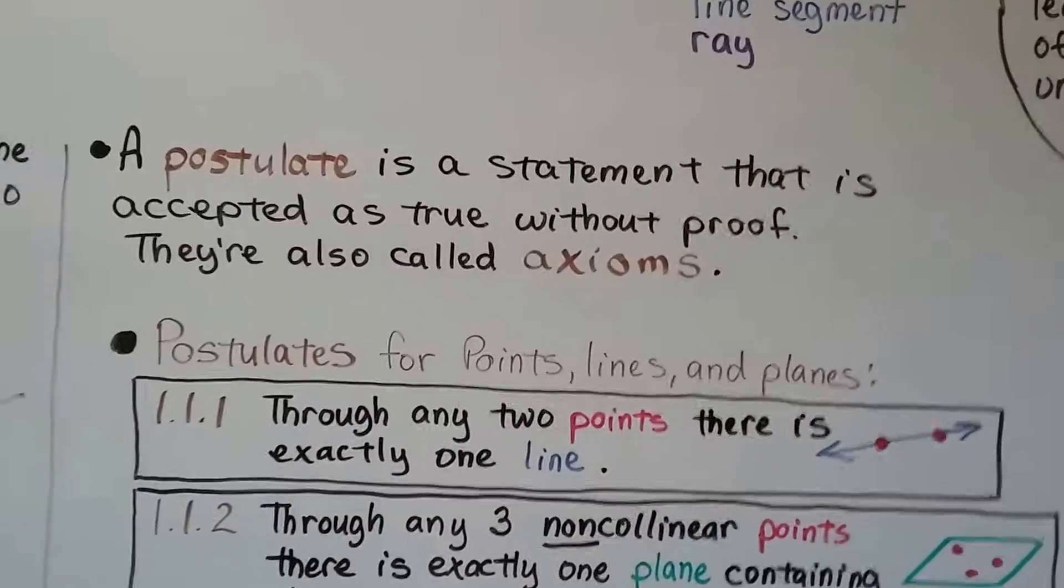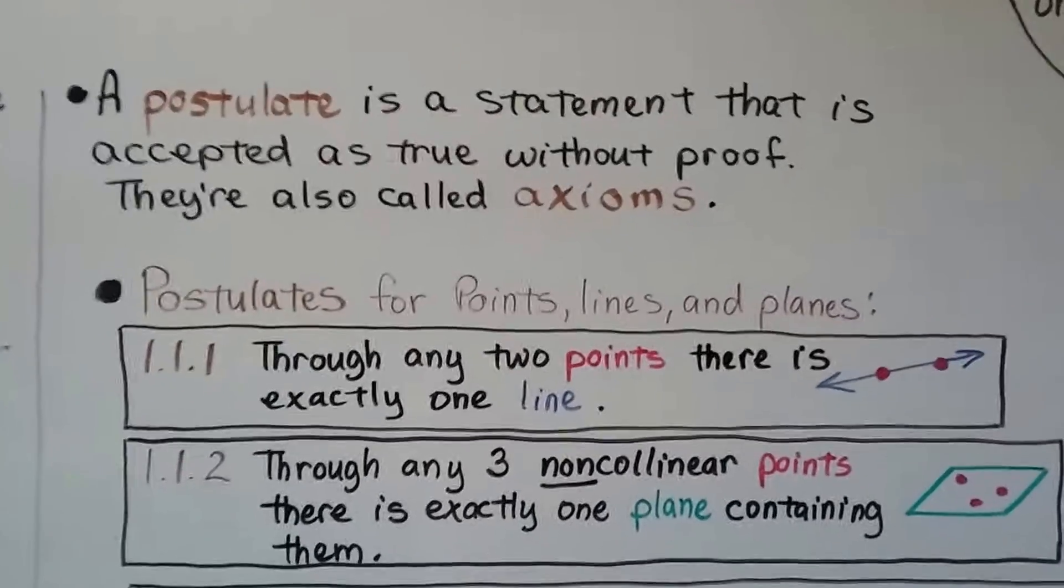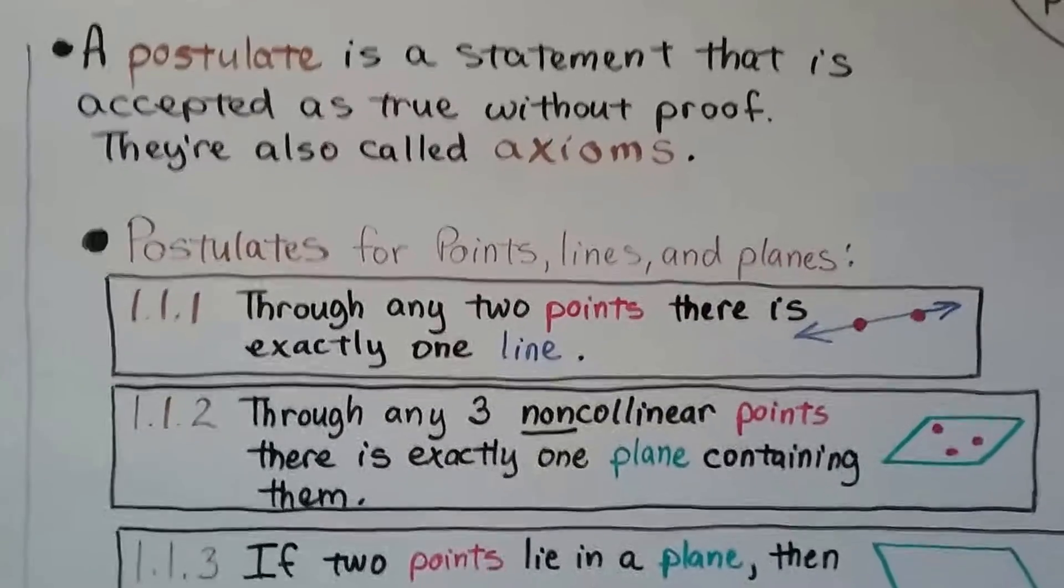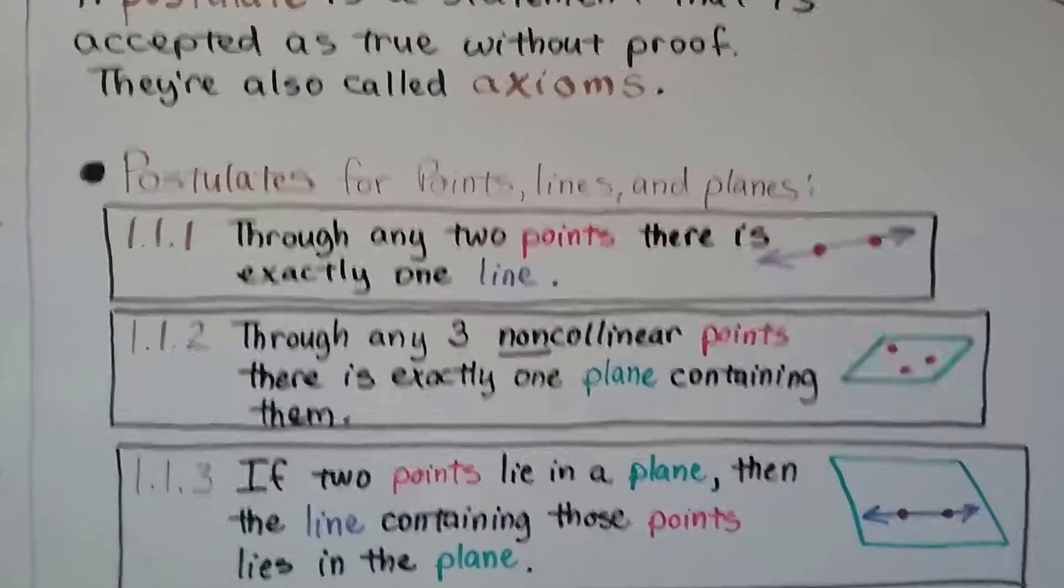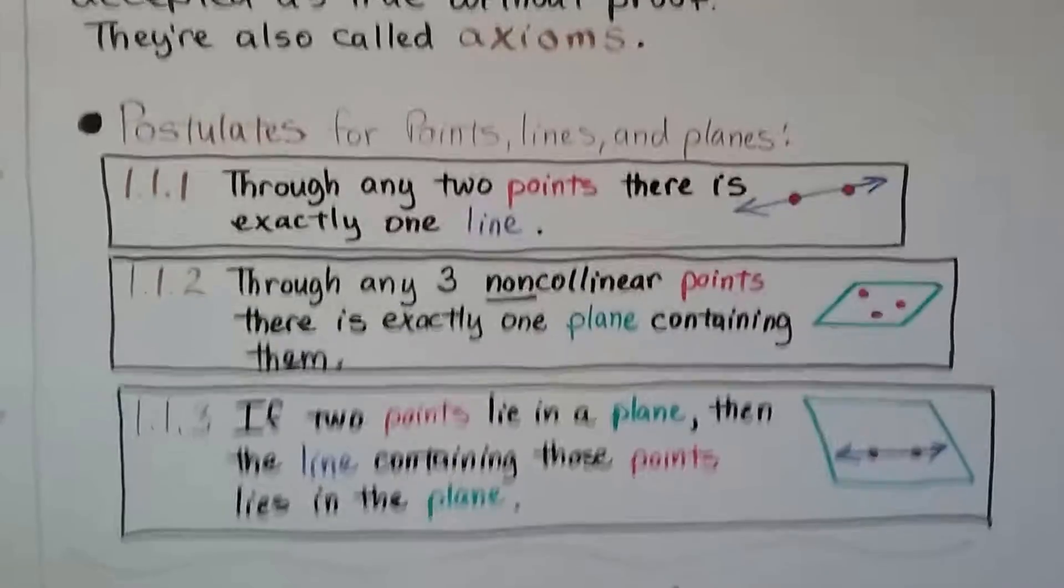A postulate is a statement that is accepted as true without proof. They're also called axioms. So, postulates for points, lines, and planes. We've got these three postulates.